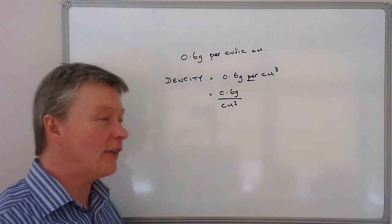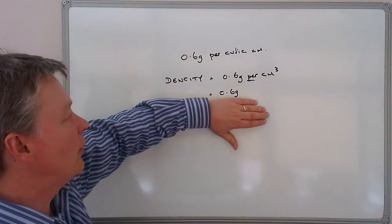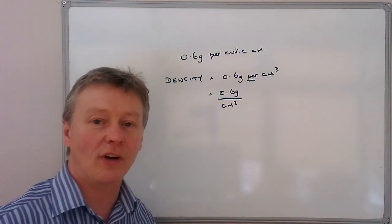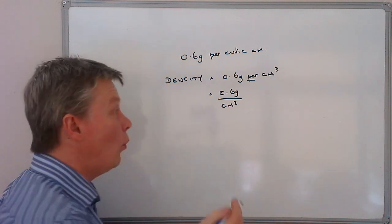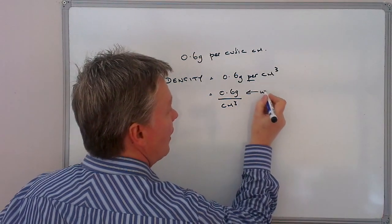So in other words, what we have here if we look at the top bit, we've got just a measurement of weight. 0.6 grams is a measurement of weight. So there we go, that's weight.